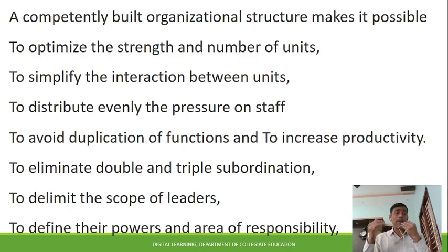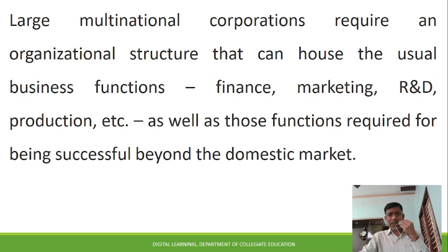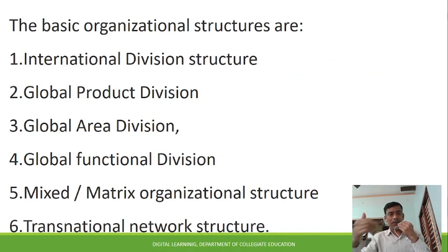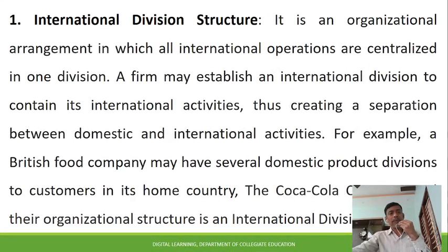Large MNCs require an organizational structure that can house usual business functions like finance, marketing, R&D, and production, as well as functions required for success in both domestic and foreign markets. There are six very important types: international division structure, global production division, global area division, global functional division, mixed or matrix structure, and transnational network structure.